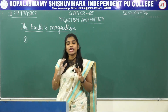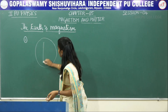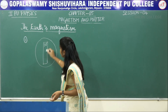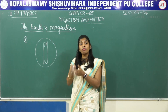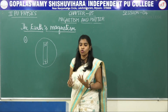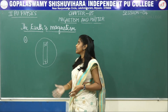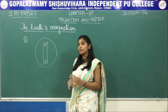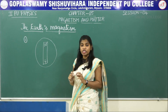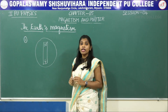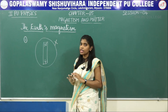Coming to earth's magnetic field — at the beginning, it was assumed that a bar magnet is present inside the earth. If you suspend a bar magnet freely, it comes to rest in the north-south direction. They assumed there may be a bar magnet inside the earth producing the magnetic field. But inside the core of the earth, the temperature is very high. Magnetism cannot exist at such high temperatures, and so this assumption was cancelled — it failed.